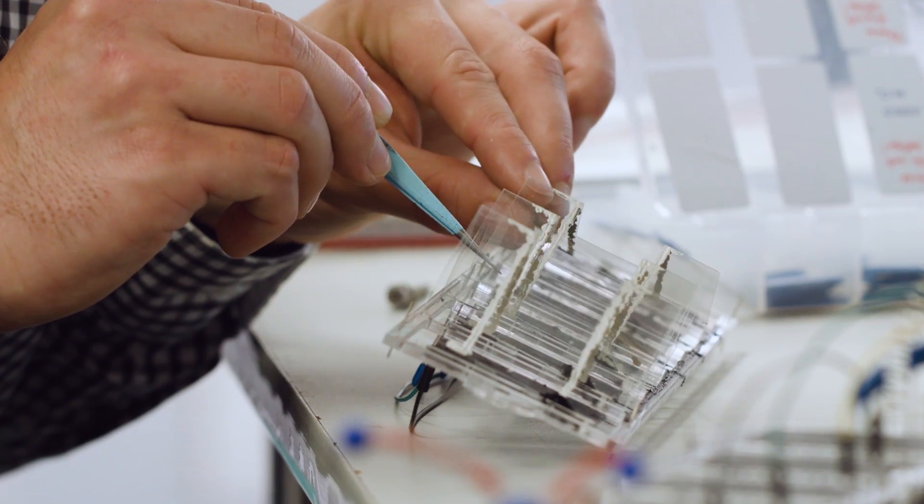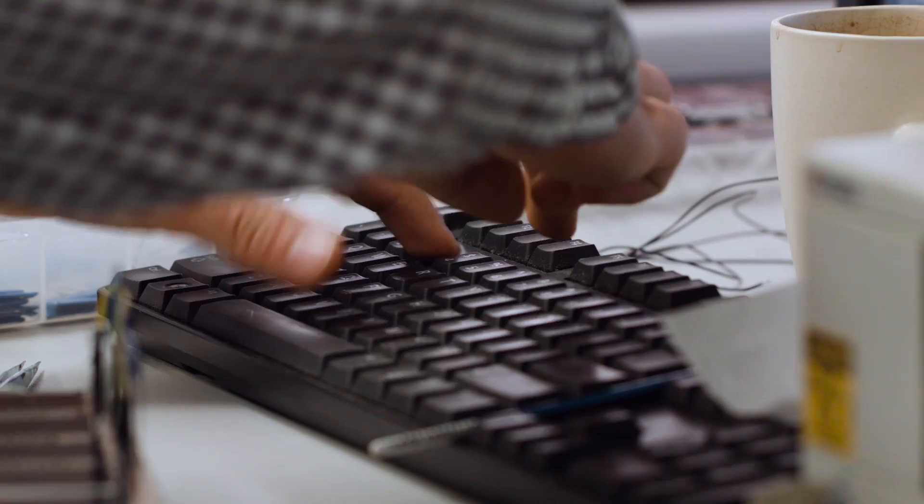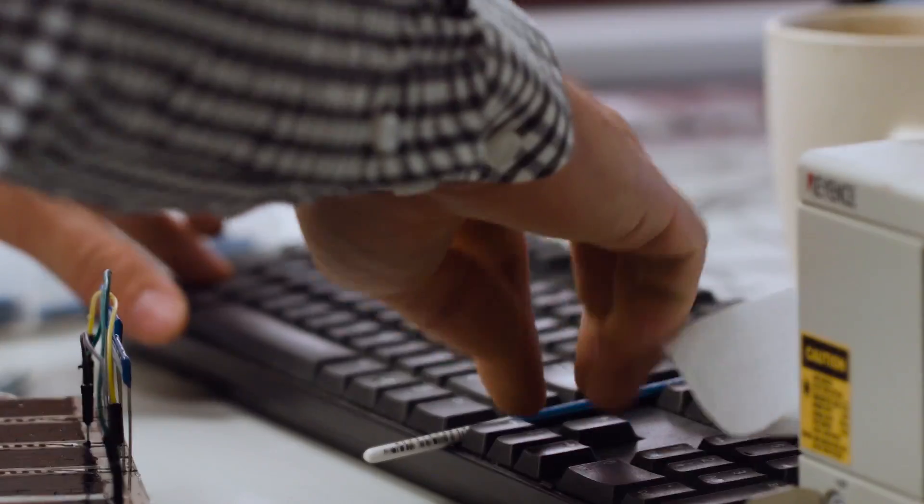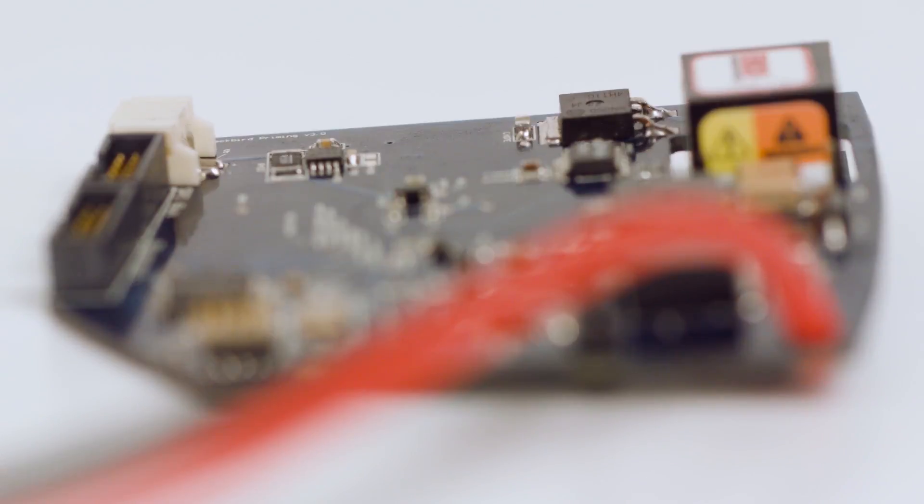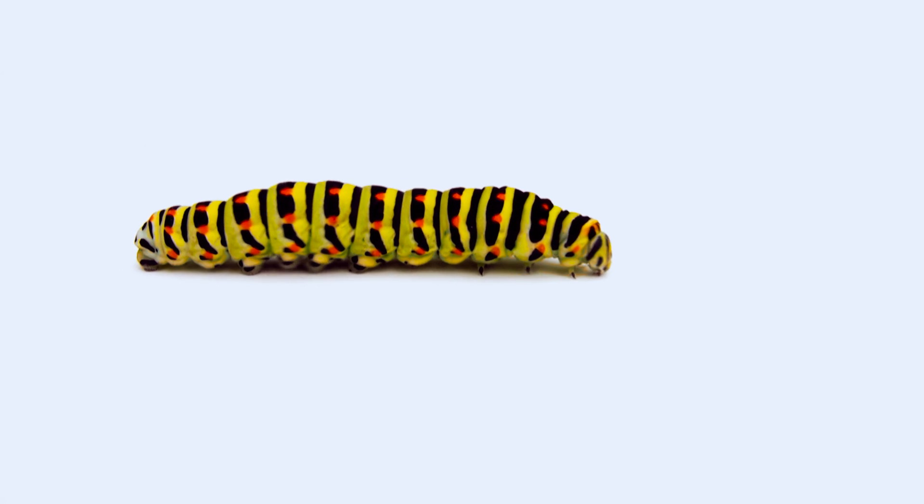To see why an artificial muscle is different, think about most of the devices and appliances that you use. They're hard and stiff. The technical world is built around hard, whereas the biological world is soft and flexible.